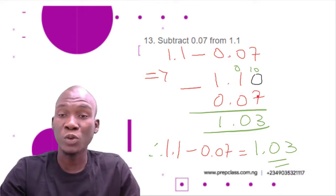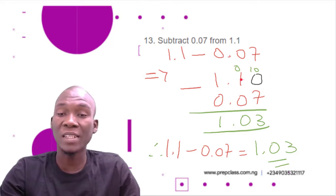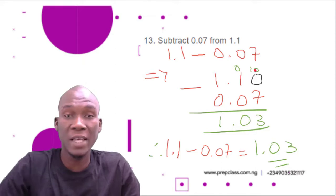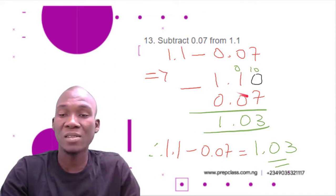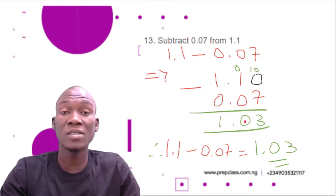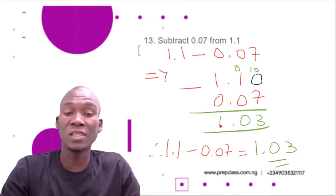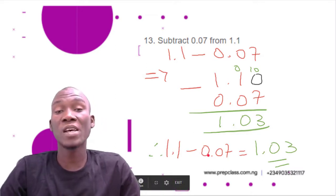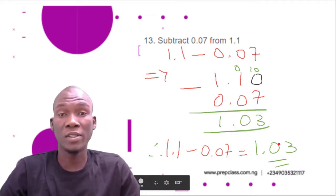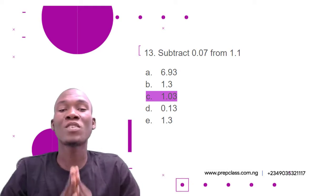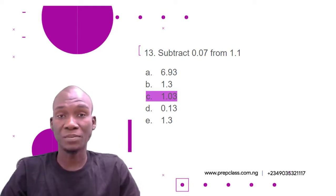Now we need to subtract: 0 minus 7 is impossible, so we borrow one from the digit after zero. The digit here is 1; if you borrow one from it, it changes to zero. The one we borrowed joins the 0 to give us 10. Now 10 minus 7 gives us 3. Then 0 minus 0 gives us 0. We drop down the point, and 1 minus 0 is 1. So 1.1 minus 0.07 equals 1.03. The correct option is option C.